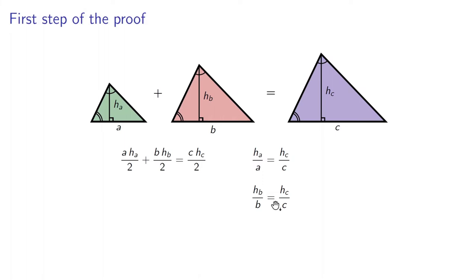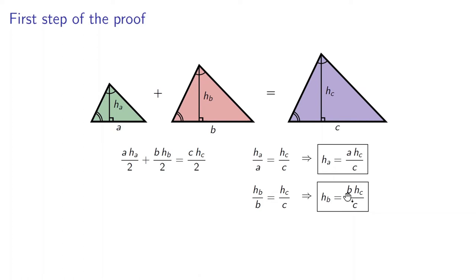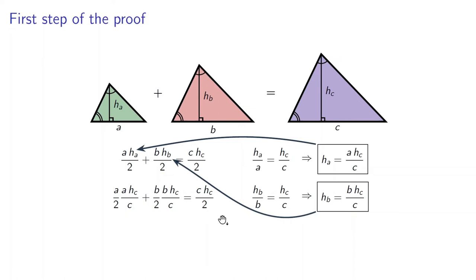HA equals A·HC over C, and HB equals B·HC over C. Now, plugging into the first equation, we have: A over 2 times (A·HC over C) plus B over 2 times (B·HC over C) equals C·HC over 2. Combining variables in the first two terms: A squared times HC over 2C plus B squared times HC over 2C equals C·HC over 2. We can simplify HC and 2 on the three terms, obtaining A squared over C plus B squared over C equals C.